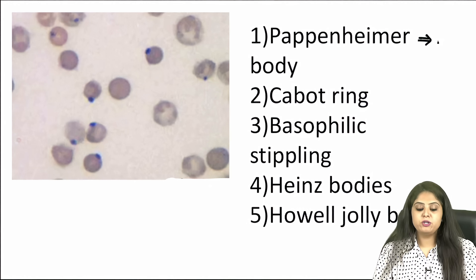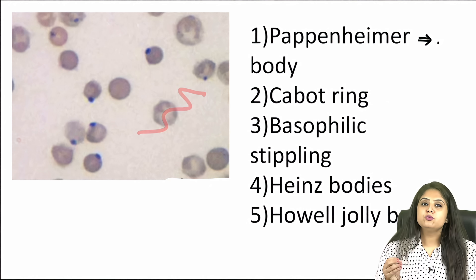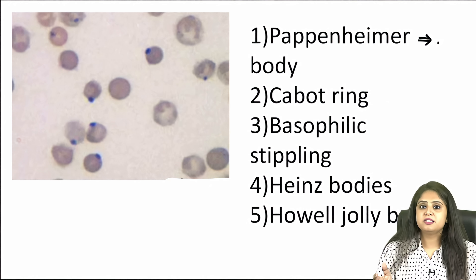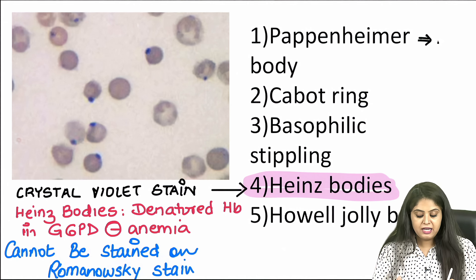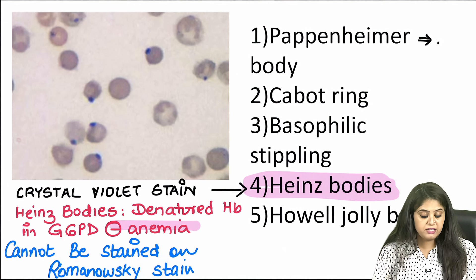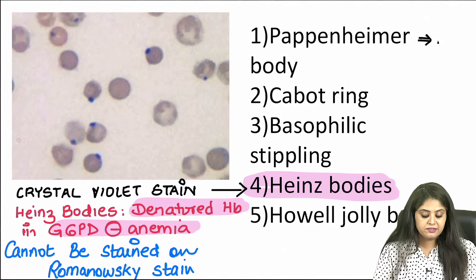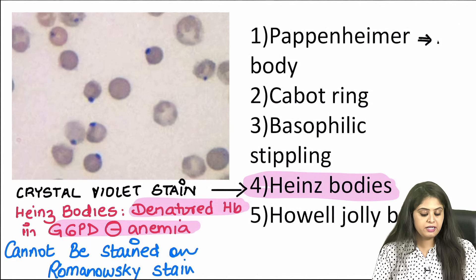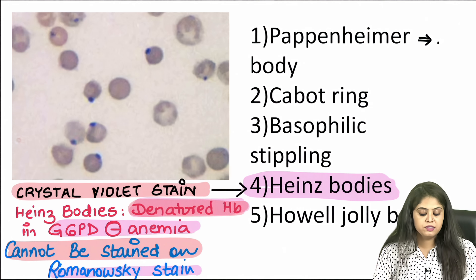The second theme is image-related, from hematology. Looking at the stain, this is not the usual reddish-pinkish Romanovsky stain. The body shown is not stained on Romanovsky but on a stain called crystal violet, which makes it a Heinz body. Heinz bodies are seen in G6PD deficiency anemia, where there is a lot of oxidative damage because G6PD is absent, causing hemoglobin to become denatured.